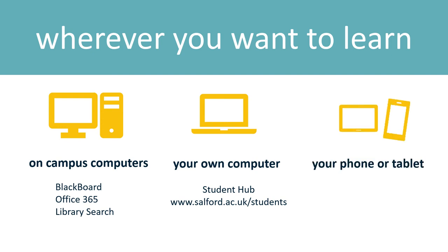For mobile devices, we'd recommend you do four things to get set up — and you'll need your login details to do this. First, when you're on campus, save your data and connect to the university Wi-Fi: UOS-WiFi. Second, get the Outlook app so you can access your student email on your phone.